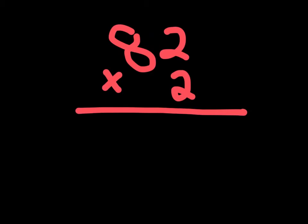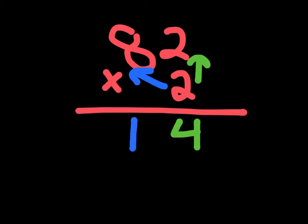So, we have problem number 1, which is 82 times 2. So, first, we would make our first path, which goes from 2 to 2, meaning 2 times 2. And 2 times 2 is just 4. Then we make our second path, which goes from 2 to 8, meaning 2 times 8, which is just 16. So, we'd write a 16 right here. So, our answer to 82 times 2 is just 164. Awesome.